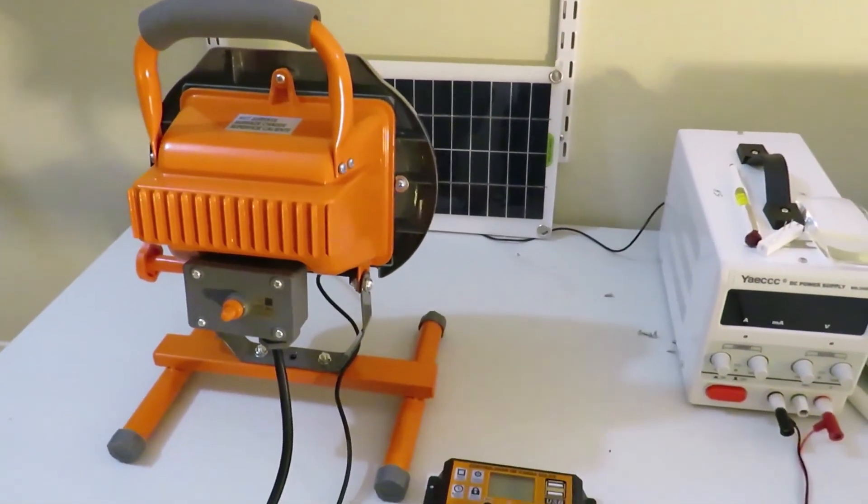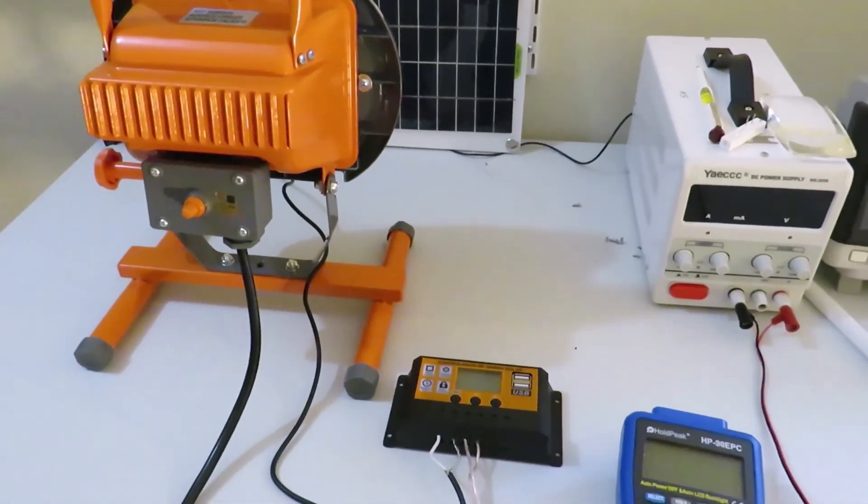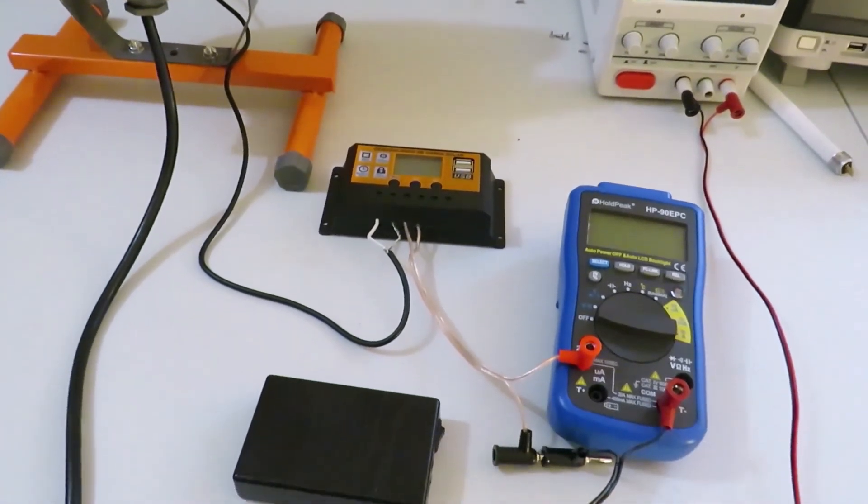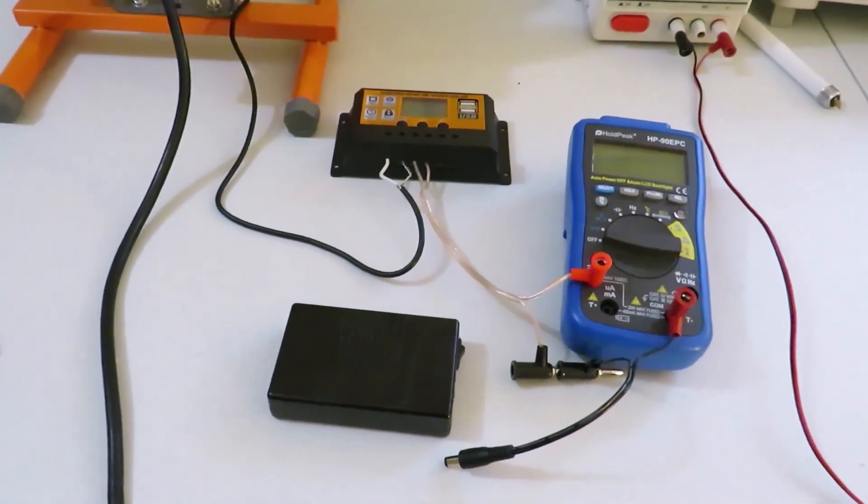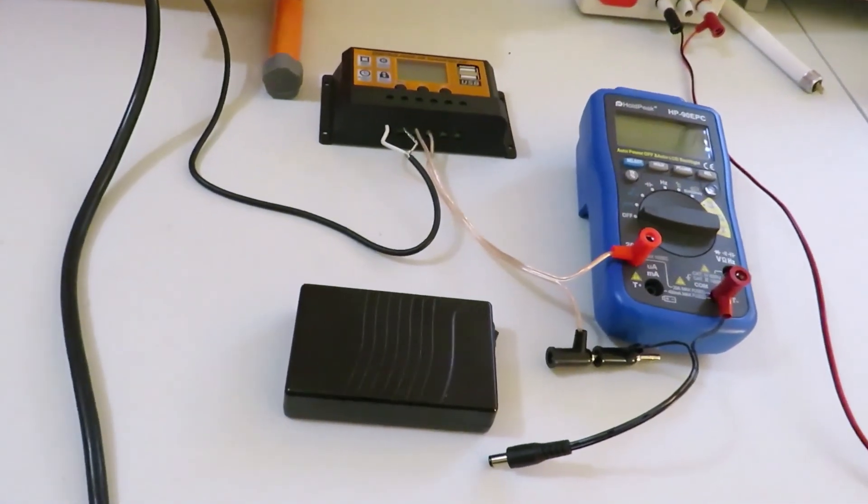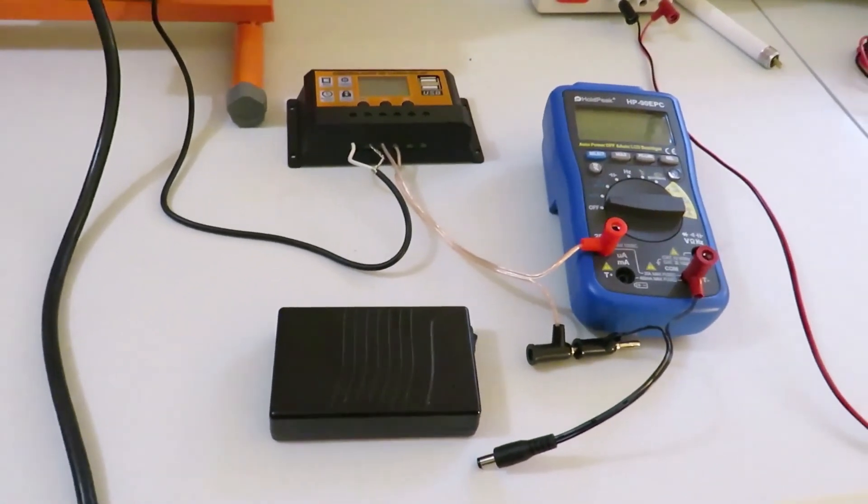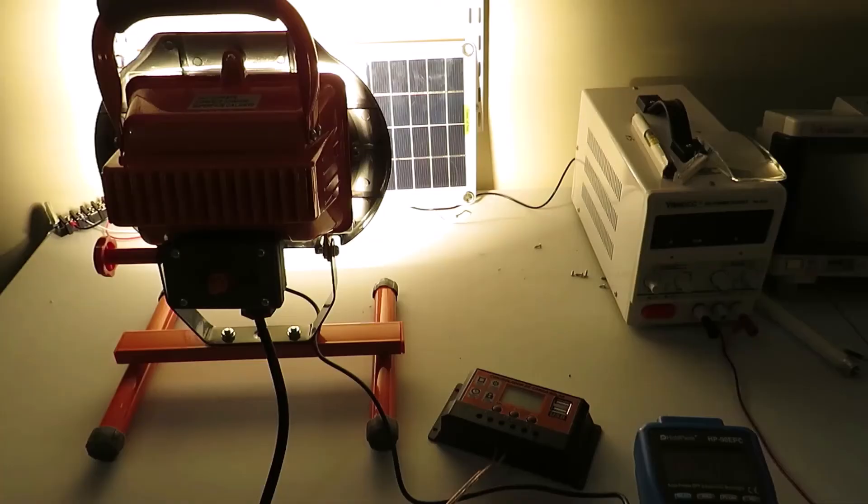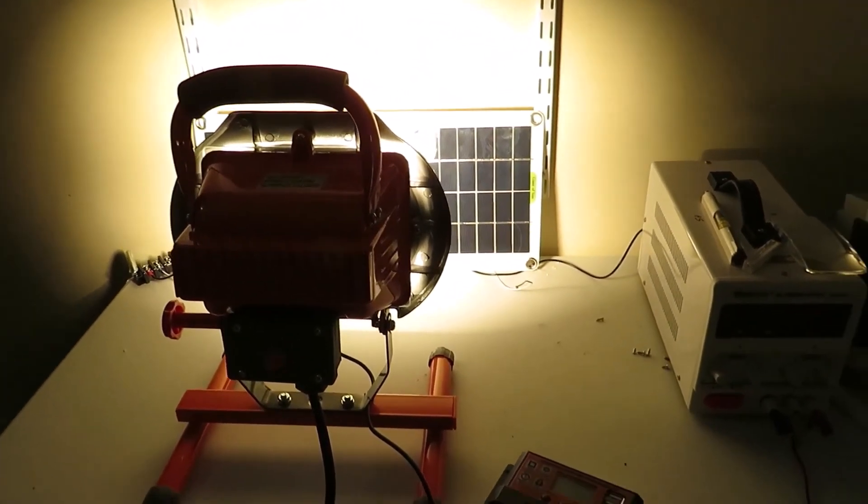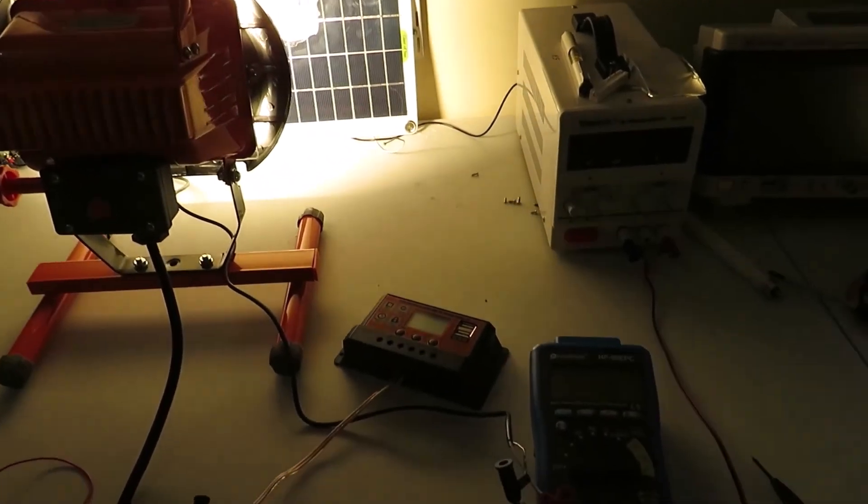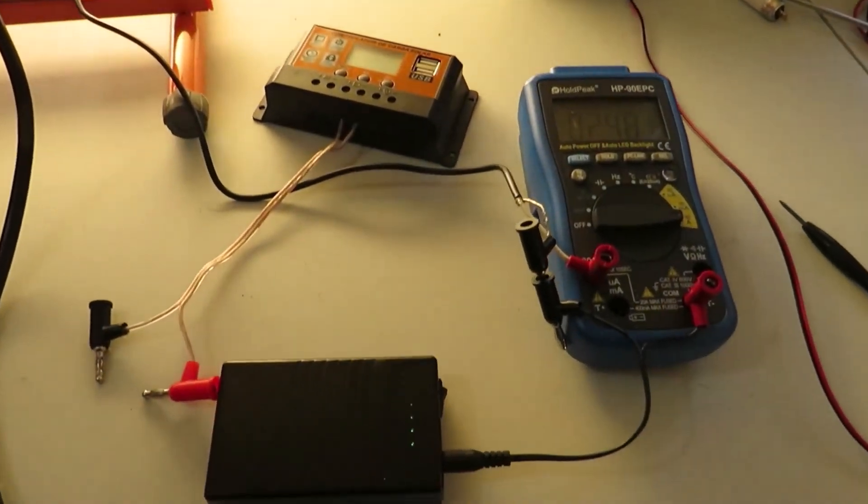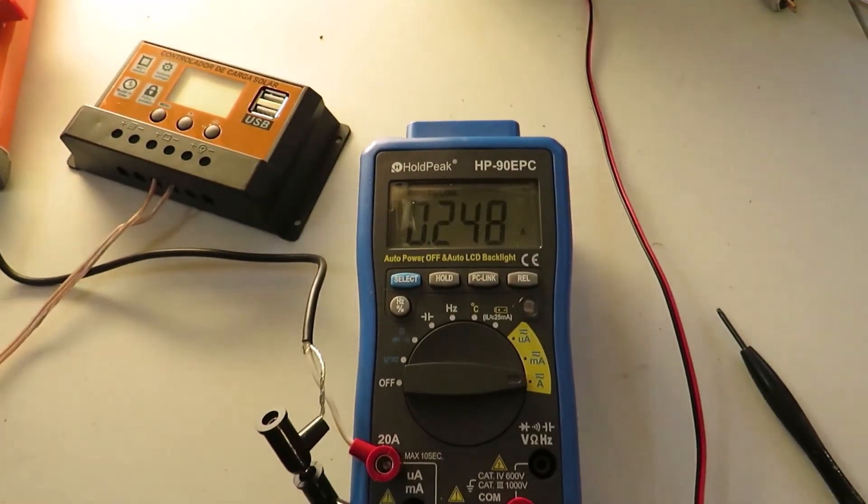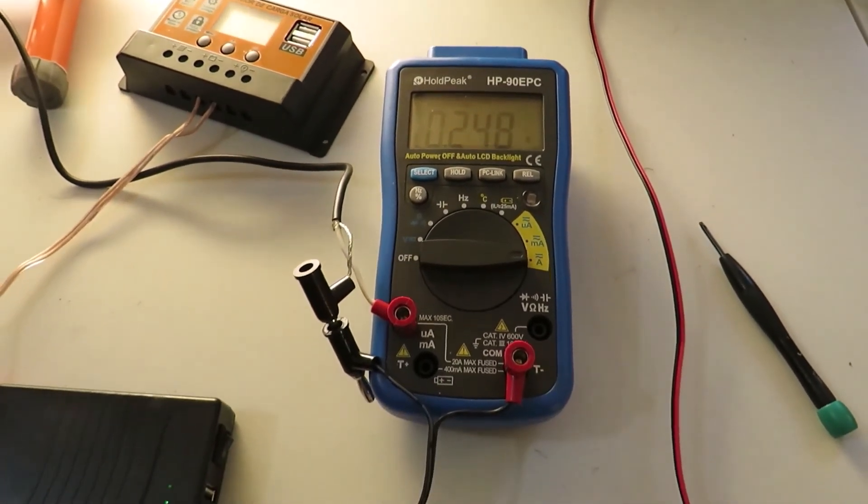And the battery bank is being used. Setup is being prepared for battery charging with the charge controller. In the first test, the photovoltaic panel output is directly connected to the battery without the charge controller and the current is measured. We can see it is 0.248 amp.